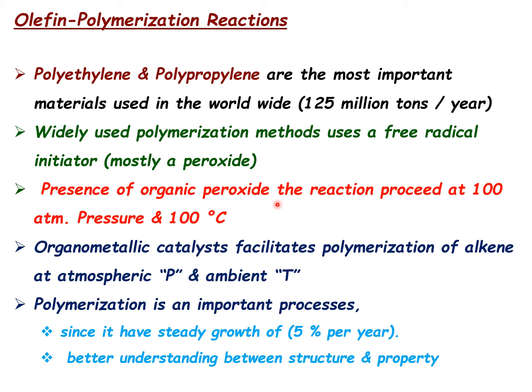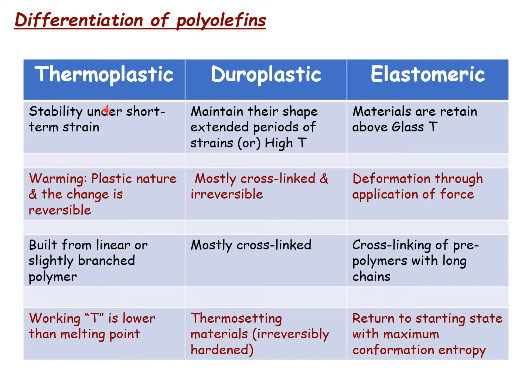Before going to the catalyst aspects, let's briefly discuss the different types of polyolefin products. Polyolefins can be classified as thermoplastic, duroplastic, or elastomeric based on their properties. Thermoplastics have relatively good stability under short strain and have a plastic nature when warmed — changes are reversible. They are built from linear or slightly branched polymers, and the working temperature is lower than the melting point.